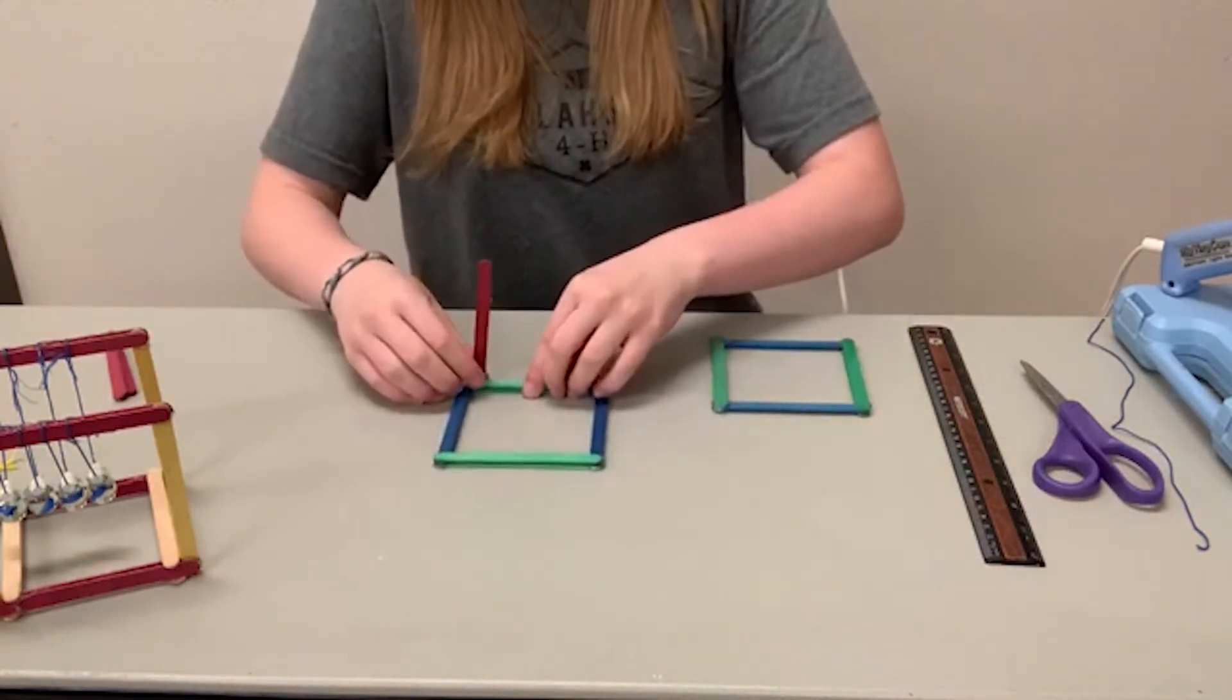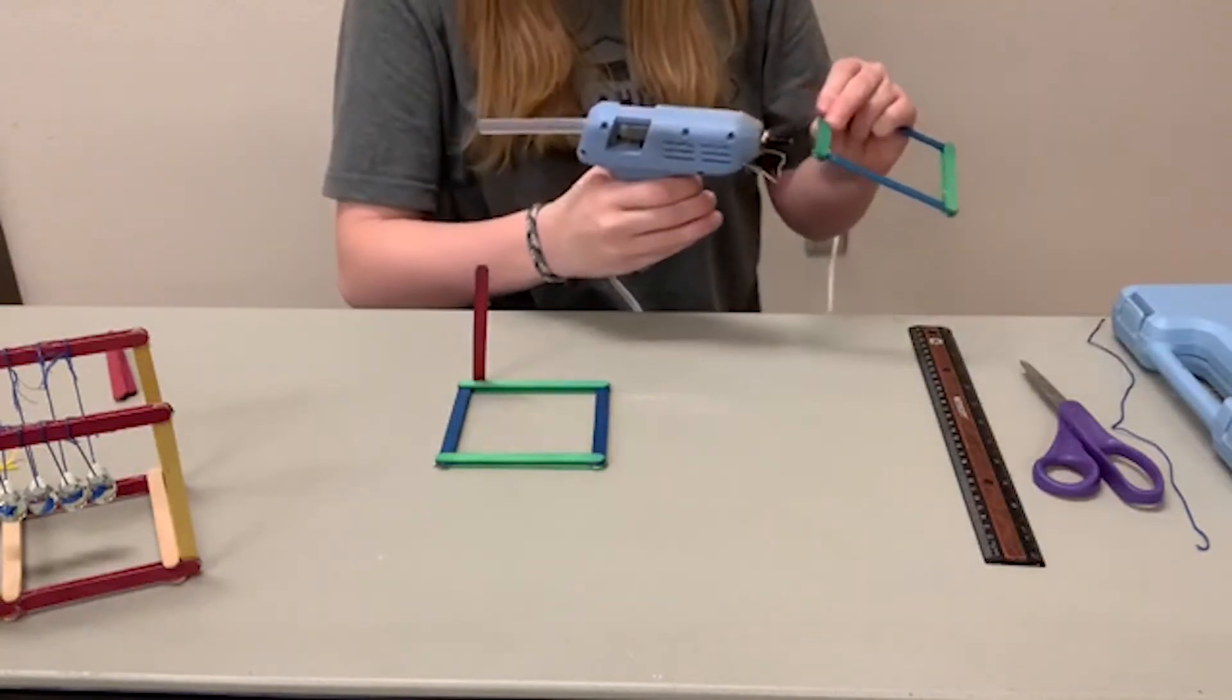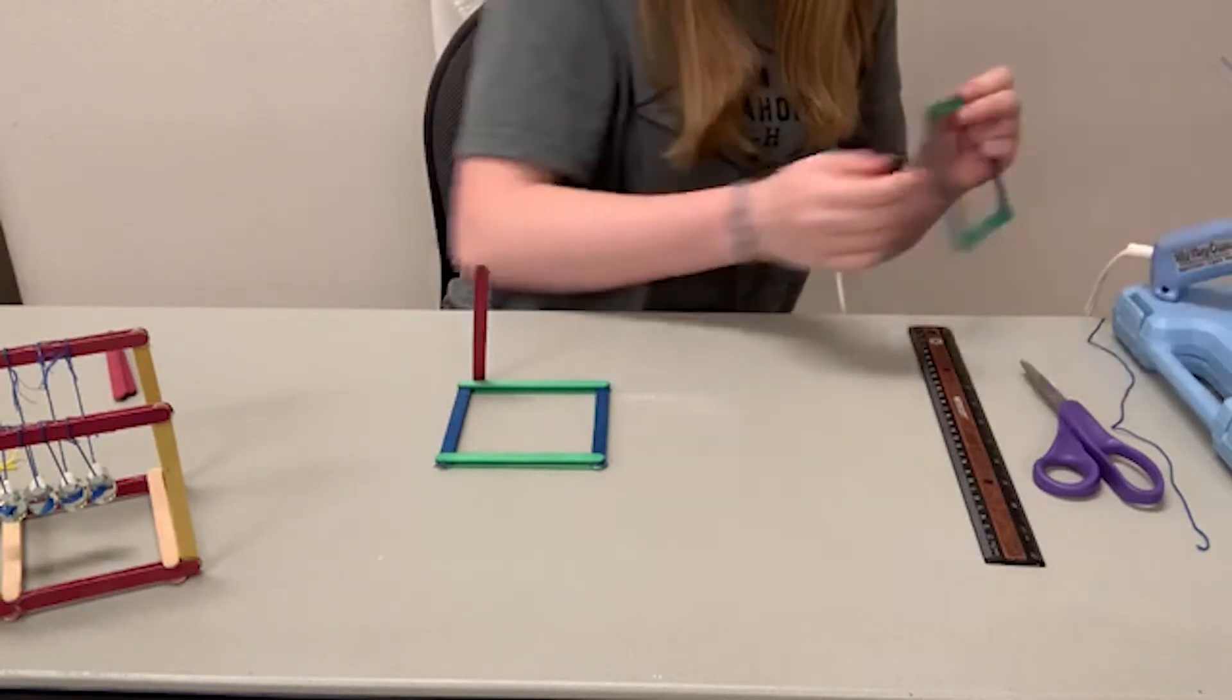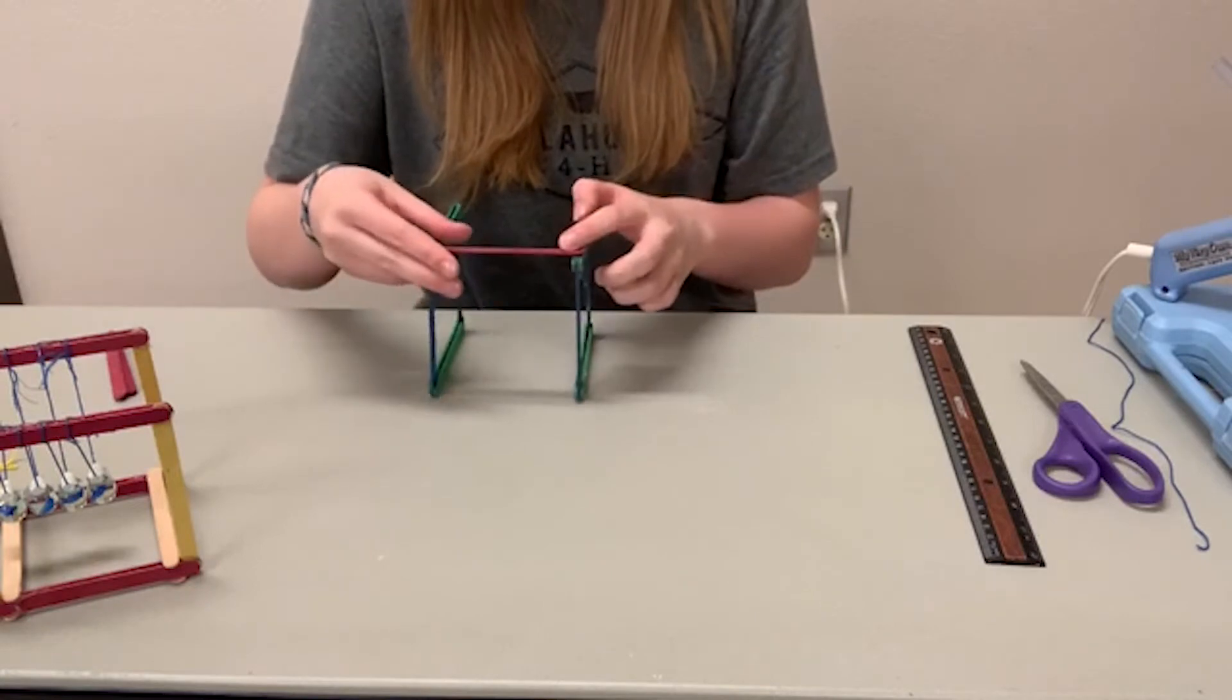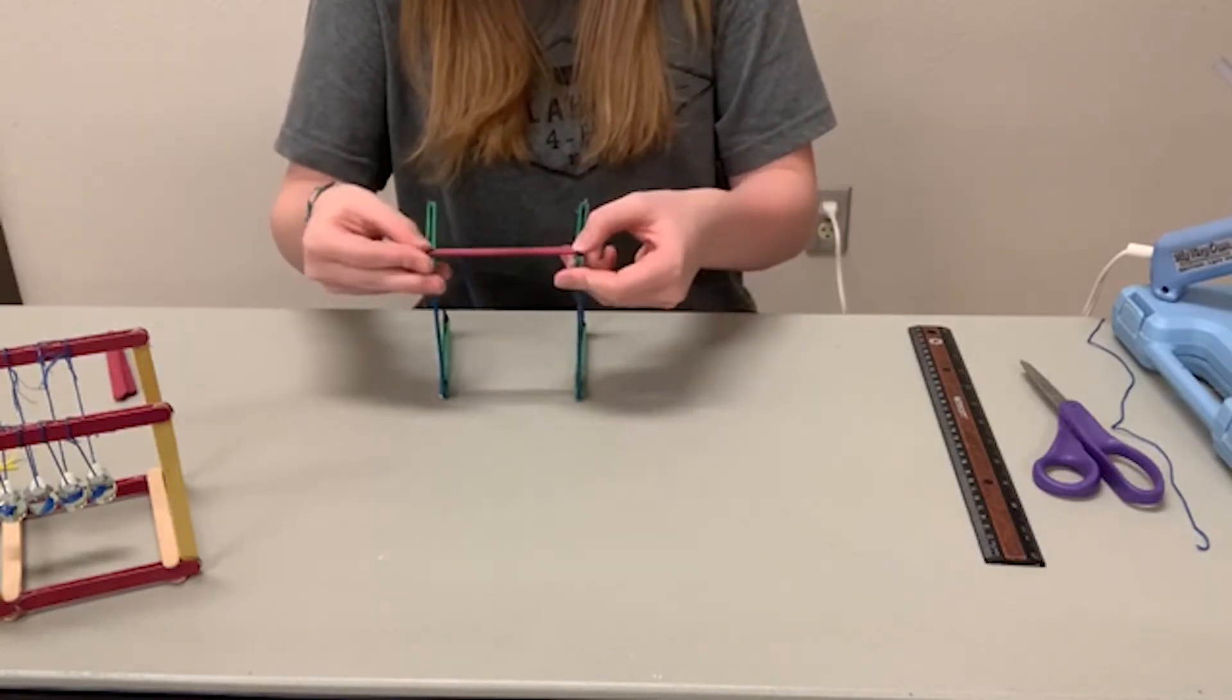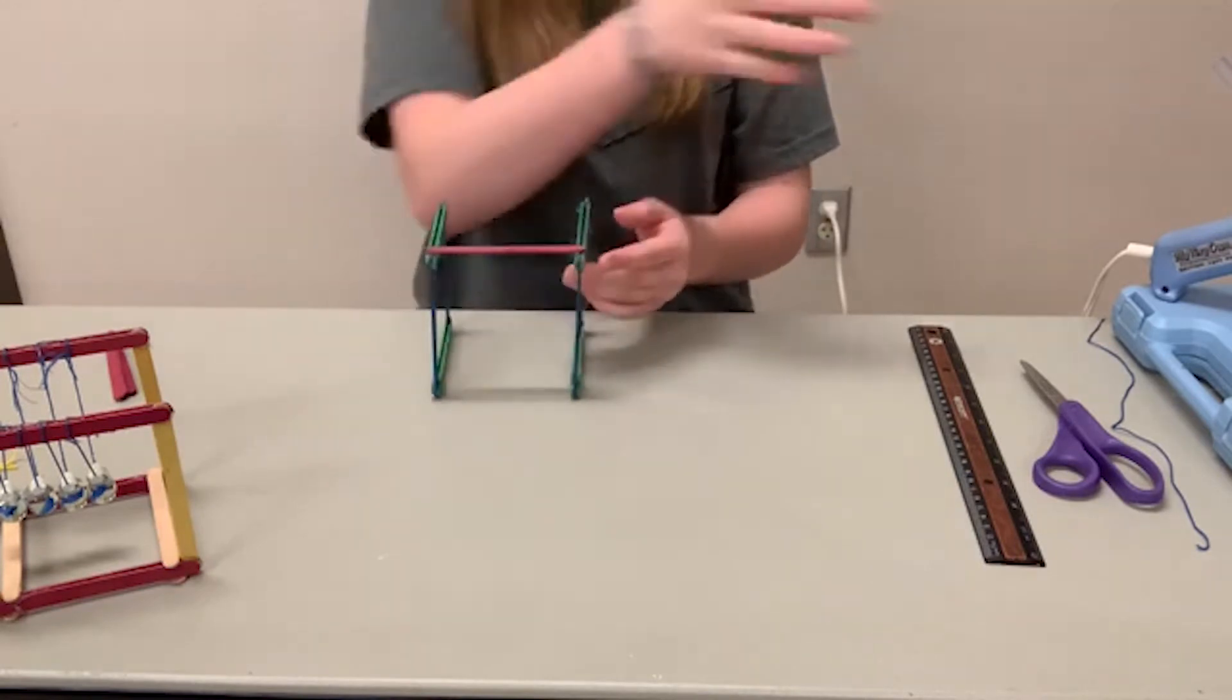You can set that up just like this and get your other side. Put hot glue on one corner and press it to the other side of the popsicle stick. Be sure that they stand flush with the table and then do the same thing on the other side.